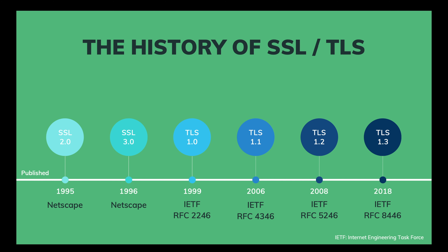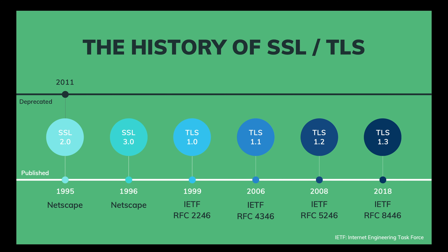So at the moment, which SSL or TLS versions still exist? SSL version 2 was deprecated in 2011. SSL version 3 was deprecated in 2015. And recently in March 2020, TLS 1.0 and TLS 1.1 were also gone. That means only TLS 1.2 and 1.3 are still alive.